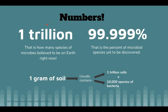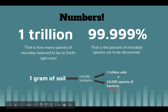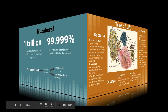Now let's talk about numbers. There is believed to be one trillion microbes on Earth as of today, and 99% of them haven't been discovered yet. Here is the scale — the enormity of microbes. Only one gram of soil can contain around one trillion individual cells and 10,000 different species of bacteria.